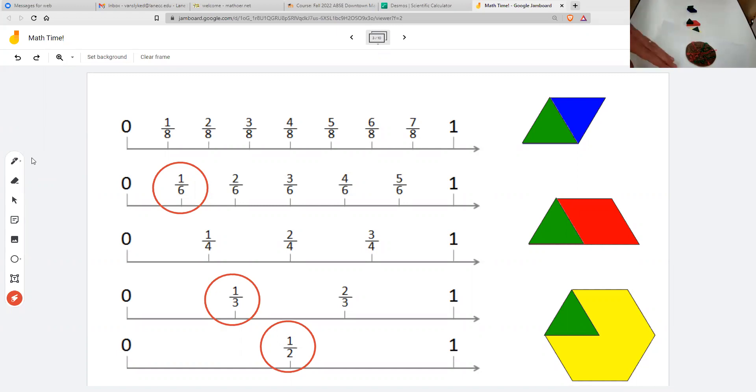But with the pattern blocks, it looks like the opposite patterns. On the top, we have one half, and it looks like half is green. Then the next one, we have one third, and it looks like one third is red and is green. And on the bottom, we have one sixth, because you can take six of these greens to make the yellow, and it looks like one sixth is also green.